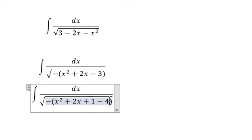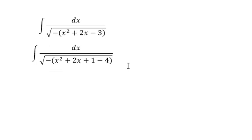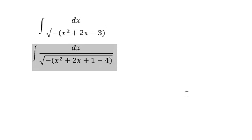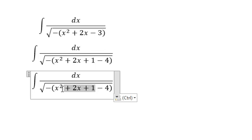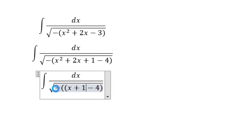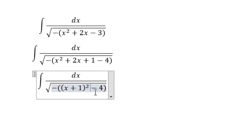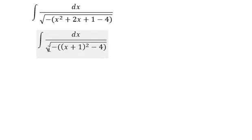Because 1 minus 4, we get minus 3. Now we have x squared plus 2x plus 1, which we rewrite as (x plus 1) squared. Then we separate the terms, putting the negative next to the bracket and next to minus 4, giving us 4 minus (x plus 1) squared.